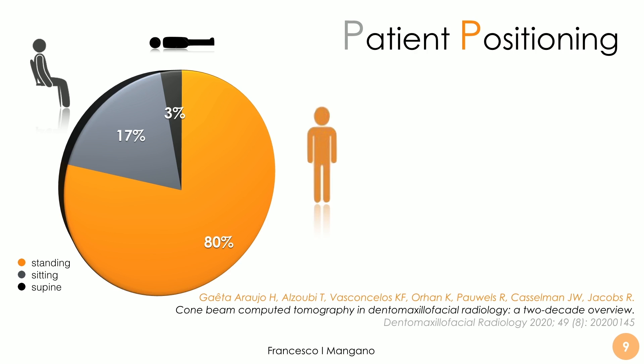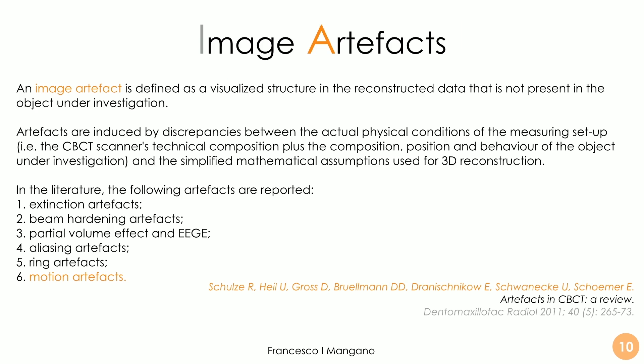Analyzing the literature, I found in a recent article that most CBCTs available on the market have the patient standing — in the classic position of the panoramic radiograph. In 17% of machines there is the option of having the patient seated, and only in 8% of machines the supine reclined position is available, so it's not so popular now compared to the beginning. The point is to avoid image artifacts. An image artifact is defined as a visualized structure in the reconstructed data that is not present in the actual object under investigation.